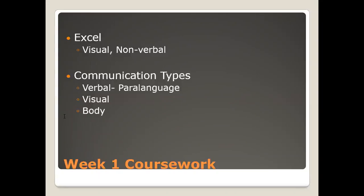One of the articles this week talks about three different communication types: verbal paralanguage, the visual, and body language. Most of us are familiar with visual types of communication — charts, graphs, pictures, video, those kinds of things. Most of us are also familiar with how important body language is, appearance, that first impression. Those are very important when it comes to communication.